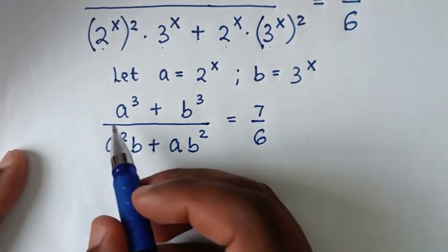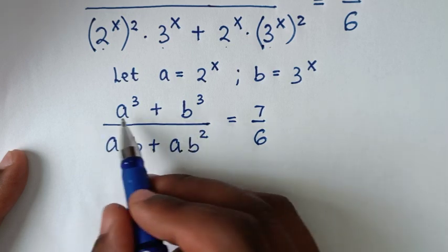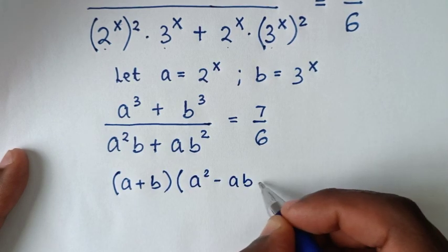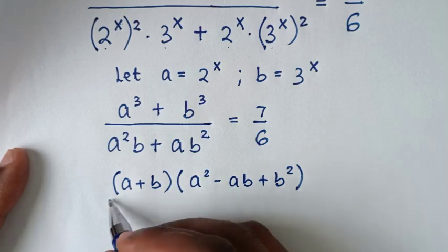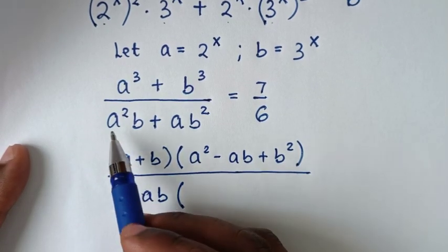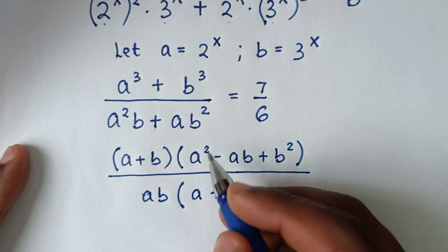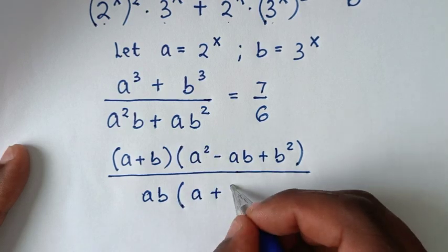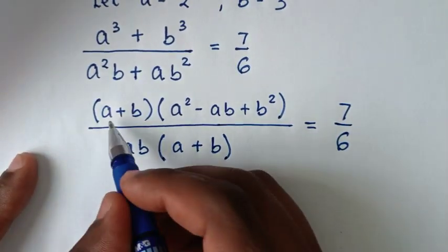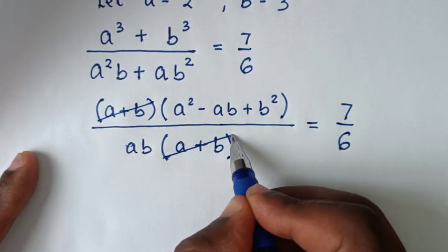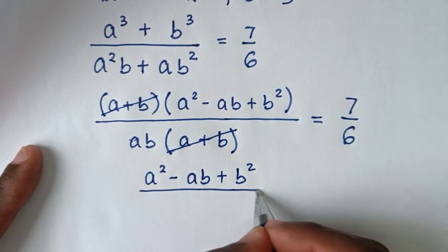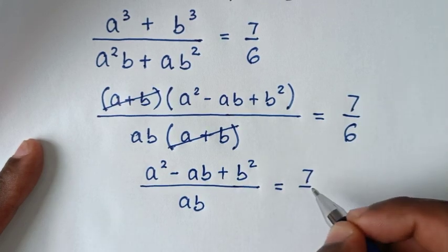In the next step, a³ + b³ is in the form of a perfect cube sum, so it equals (a + b)(a² - ab + b²). For the denominator, ab is common, so we take ab out of the bracket: ab(a + b). This gives (a + b)(a² - ab + b²) over ab(a + b) = 7/6. We cancel (a + b), leaving (a² - ab + b²) / ab = 7/6.